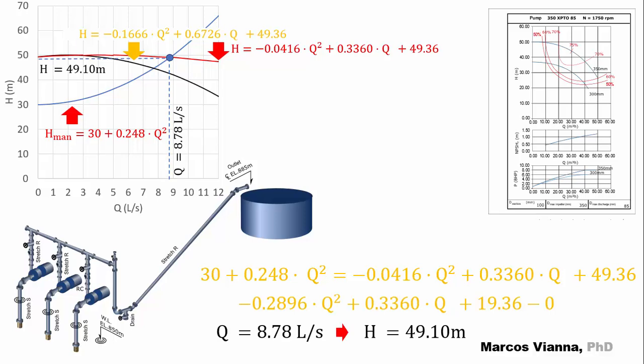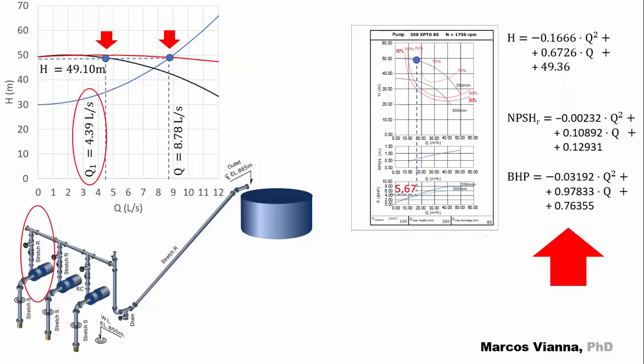Piece of cake! Notice that each pump will contribute with a half. So we'll calculate the required NPSH and the power using this flow. Here it is, at the pump chart. We must convert its value to cubic meters per hour.